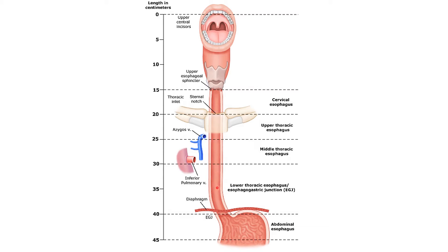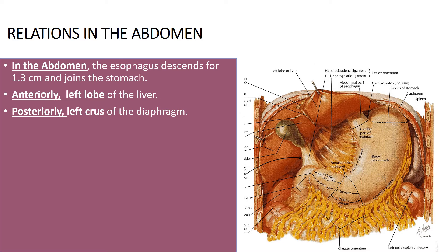In the abdomen, the esophagus descends for just one vertebra's size, around 1.25 cm. Its relations here include peritoneum anteriorly and the left lobe of the liver also covering it anteriorly. Posteriorly, you have the left crus of the diaphragm just behind.